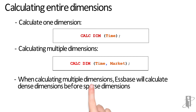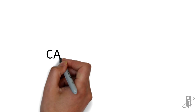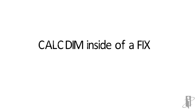Calcdim will go through and look for all the dense dimensions in your calcdim statement and calculate those first, then go back and do the sparse dimensions. It doesn't necessarily do the dense dimensions in the order you've specified them, or the sparse dimensions in the order you've specified them, so be careful. For example, with calcdim time, market, product — it might do time first, but then instead of market then product, it might do product then market.